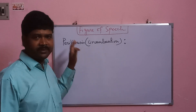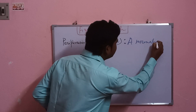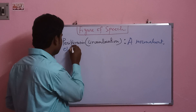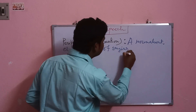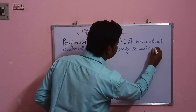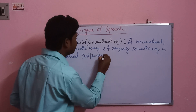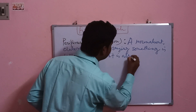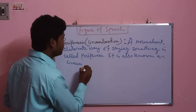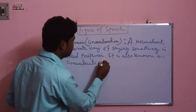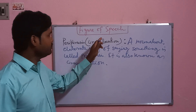So first, what is Periphrasis? A roundabout, elaborate way of saying something. Periphrasis is also known as Circumlocution — C-I-R-C-U-M-L-O-C-U-T-I-O-N.